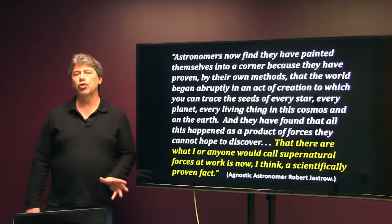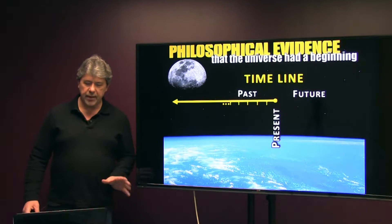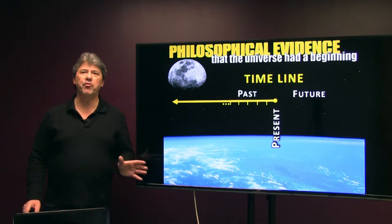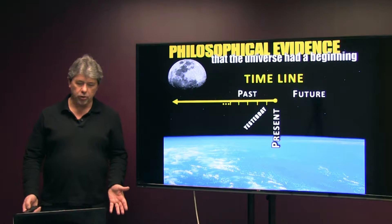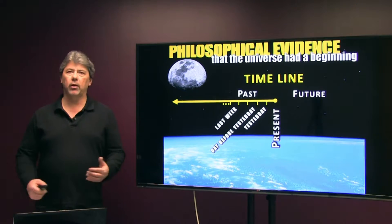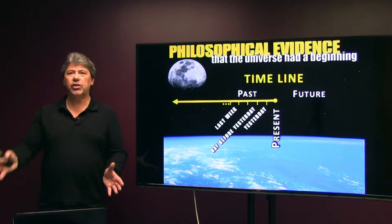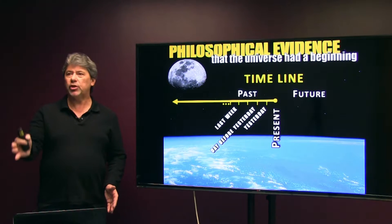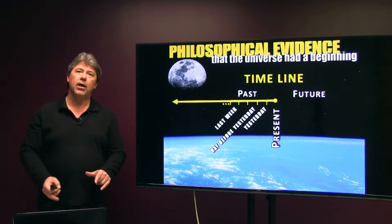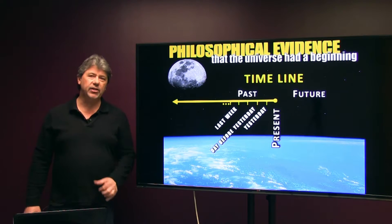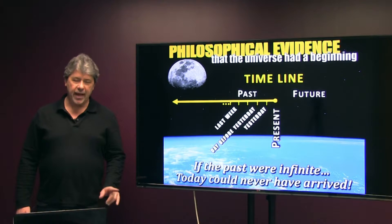Another argument, philosophical in nature, supports the universe having a beginning. If time past were infinite — if time always was — then today would never have come. We could go back to yesterday, the day before, last week — but they would be infinite. If the universe never had a beginning, we would never reach this point in time, because we have an end to our timeline, and infinity would never bring us here. So if the past were infinite, today could never have arrived. That's a philosophical evidence for the universe having a beginning.